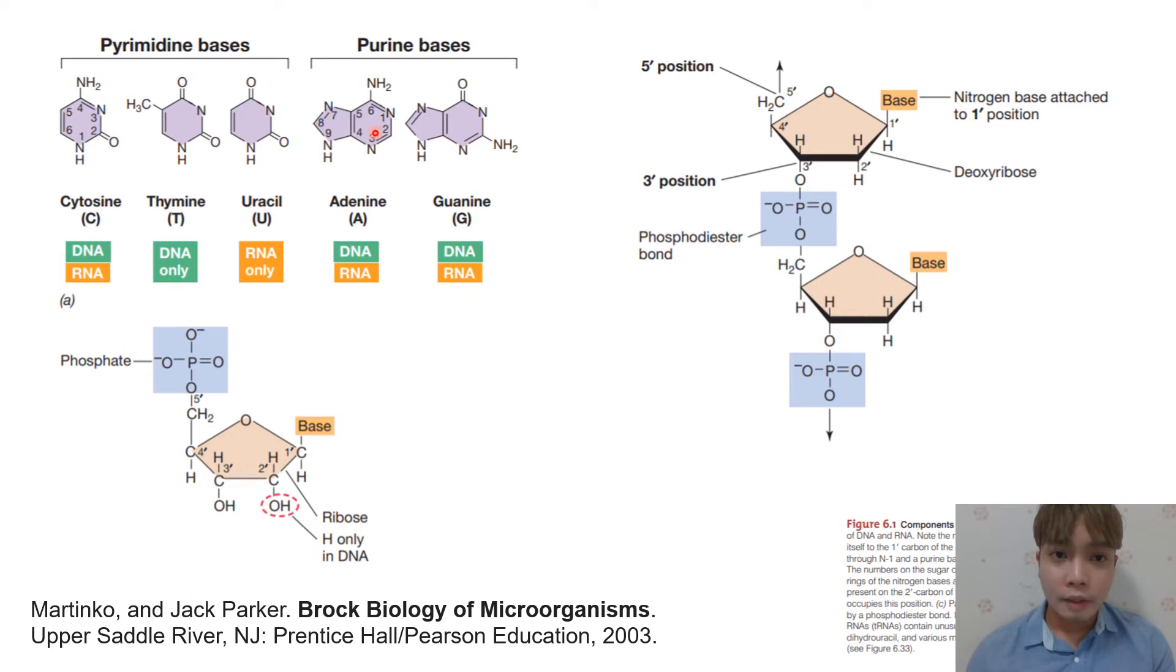For adenine and guanine, as you can see, those are purines. If it's purine, there are two ring structures. At number nine, there's NH here—number nine, NH attaches to carbon number one of our ribose sugar. So again, at carbon number one of our ribose sugar: if pyrimidine, one ring, carbon number one attached to carbon number one of our ribose sugar. If purine, nitrogen number nine attaches to carbon number one.